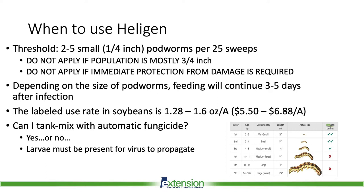The labeled use rate in soybeans is anywhere from 1.28 to 1.6 ounces per acre. At the low rate, one gallon of the virus will treat 100 acres — a gallon to 100. That's going to run you anywhere from $5.56 to $6.88 per acre. So that's a pretty economical option. Just keep that in mind when comparing it with synthetic chemistries that cost more. We're putting out a product that doesn't quite cost as much, so we can't have the exact same expectations of this virus as we do those chemistries.